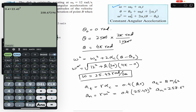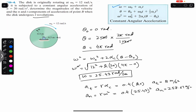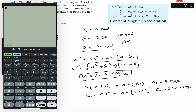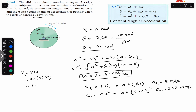We want to find the linear velocity of point B after two complete revolutions. The linear velocity v_B equals r times omega, where r is 0.4 and omega is 25.43. So 0.4 into 25.43 equals 10.17 meter per second. This is the linear velocity of point B after two complete revolutions.